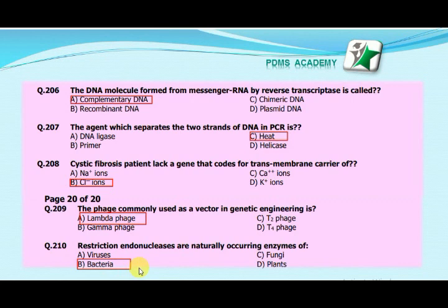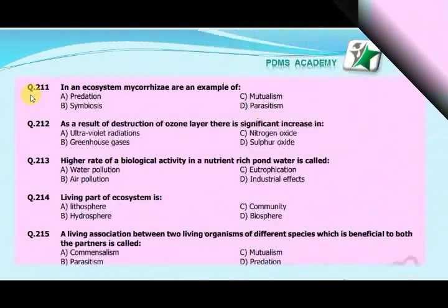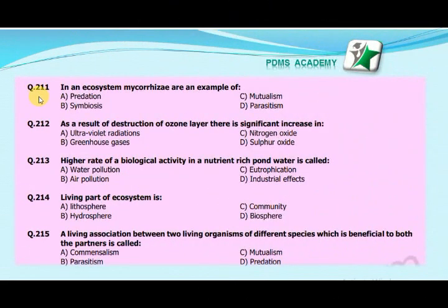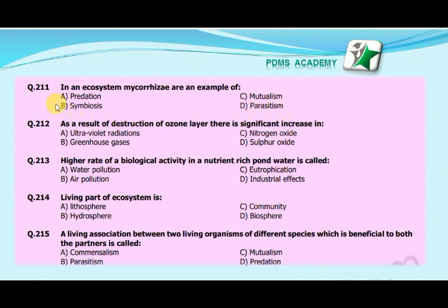Our next MCQ is: In an ecosystem, mycorrhiza are an example of — A. Predation, B. Symbiosis, C. Mutualism, D. Parasitism. The correct answer is B. Symbiosis.